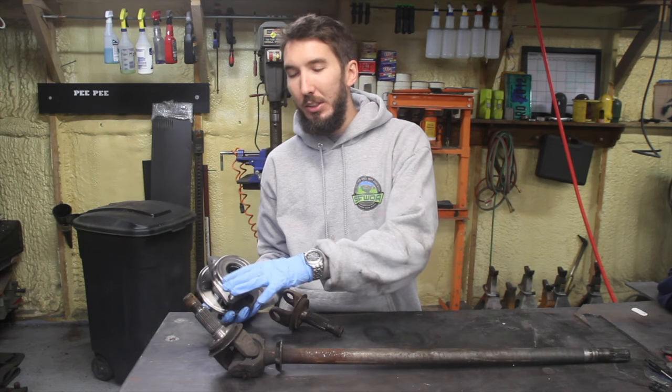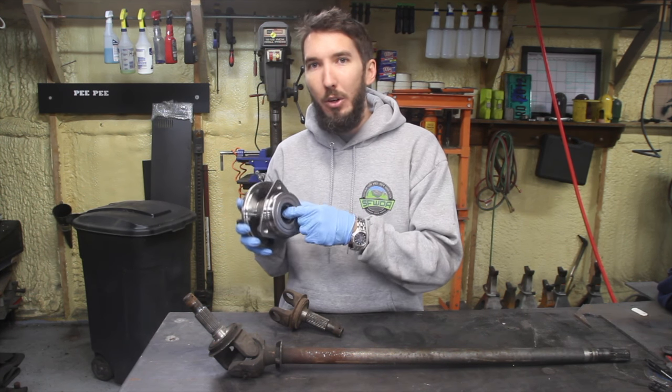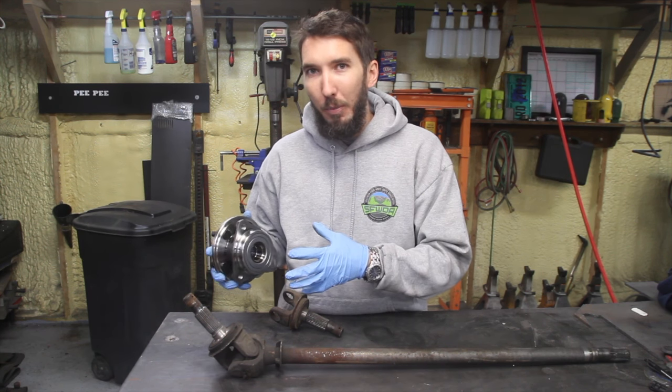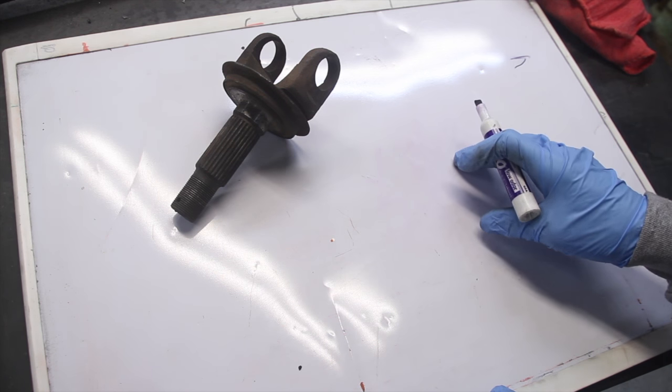You have to have, if this is a 30-spline stub shaft, you have to have a 30-spline unit bearing because they have to fit together. But what does that mean? Why is it stronger? Okay, to try to explain it, let's take a look at this whiteboard here.